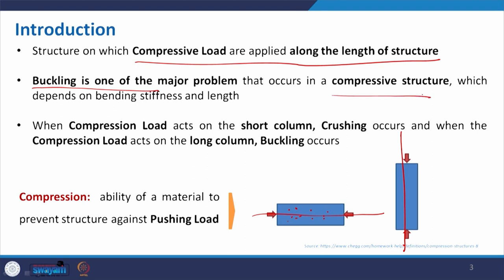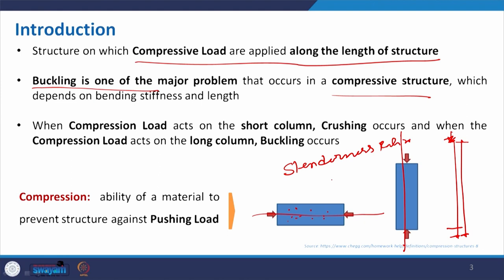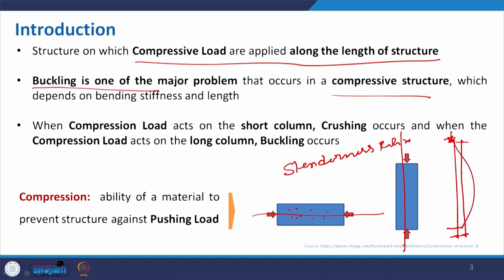What exactly is buckling? If you recall, when you have a long column and apply a load, initially it will try to compress. But if the length is quite large compared to the cross section — referred to as the slenderness ratio, the ratio between cross section and length — if it is too narrow, the load along with compression will cause bending. This bending is called buckling. For compressive structures, this is a problem when the slenderness ratio is poor.